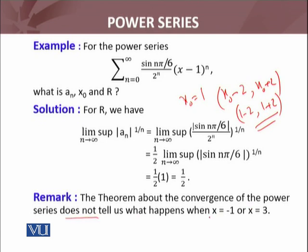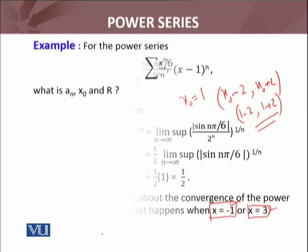The theorem about the convergence of the power series does not tell us what happens when x equals -1 or x equals 3. The interval of convergence is (-1, 3), and as I discussed earlier, at the endpoints x = -1 and x = 3, we don't know anything about the convergence or divergence of that series.